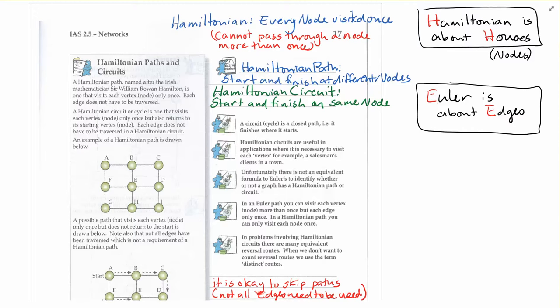Similar to the difference between path and circuit for Euler, the Hamiltonian path is one where you start and finish on different nodes. And the Hamiltonian circuit you would start and finish on the same node. The key thing for us is that you cannot pass through a node more than once.